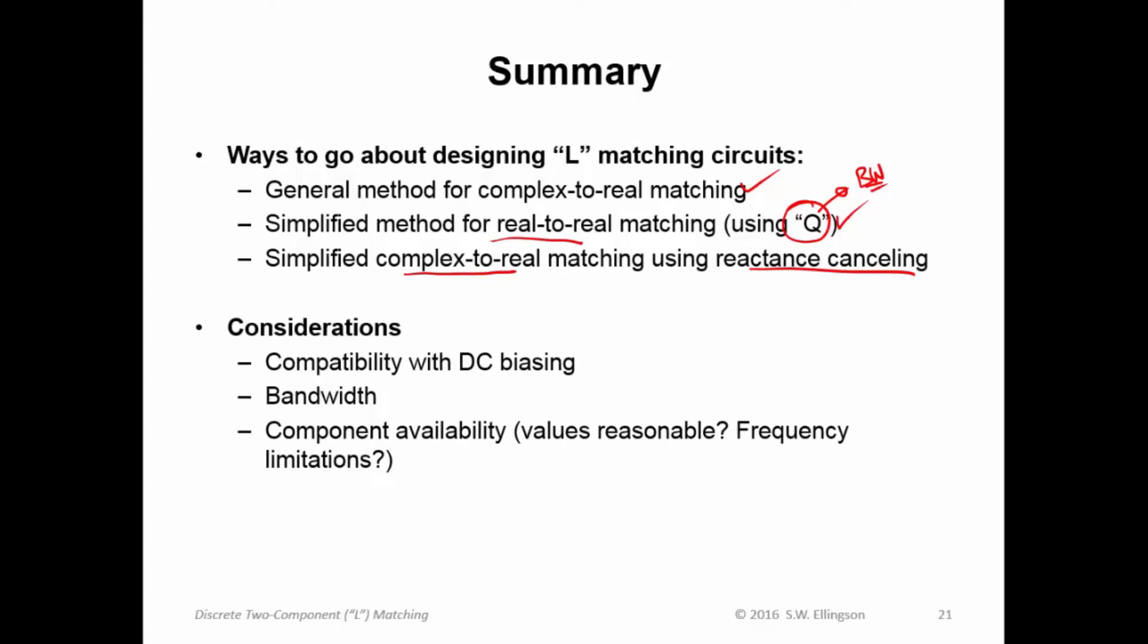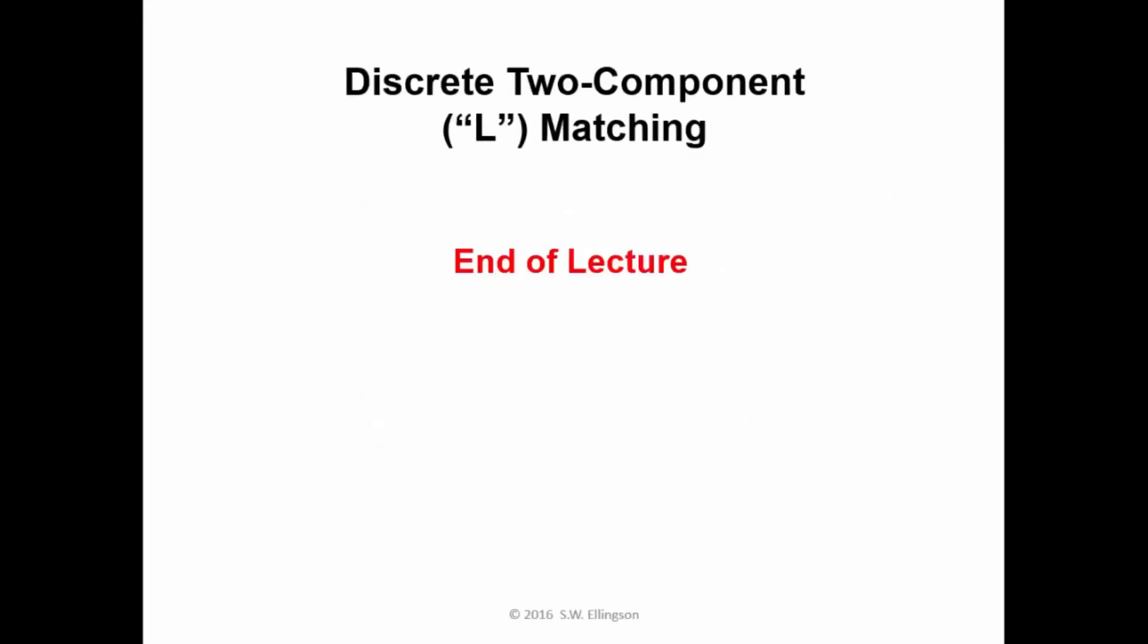And then I talked about the considerations that come up in selecting among the myriad various impedance matching circuits we can develop. One was compatibility with DC biasing. That will be a huge issue for us later in the course when we design transistor amplifiers. We have identified the fact that these things are going to have bandwidth, and that bandwidth may be either too small or too large, and we want to adjust it. That's a topic of a future lecture. And then we talked about component availability. Are the values reasonable? Will they have frequency limitations? Again, we'll see this issue come up over and over again. We'll talk about various ways to address it. This concludes this lecture on discrete two-component L matching.